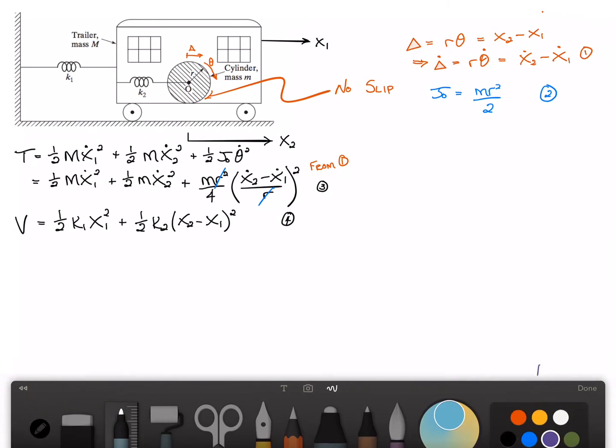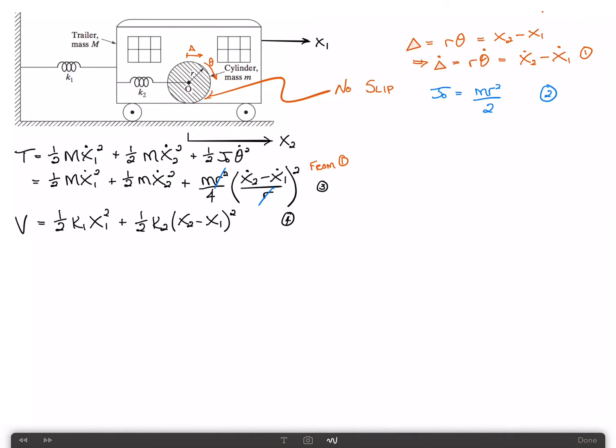Let me also write Lagrange's equations up here for you just to remind us. This can be written in this case as the time derivative of the partial of kinetic energy with respect to qi dot, plus partial V partial qi, and that's equal to the generalized force Q sub i.